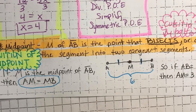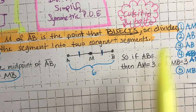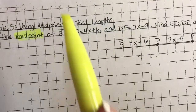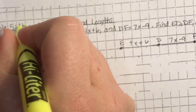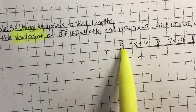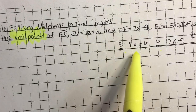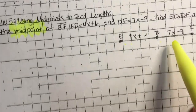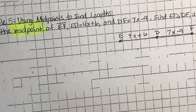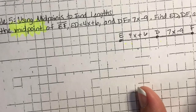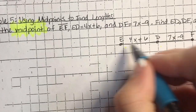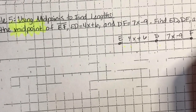D is the midpoint of EF. ED equals 4x plus 6, DF equals 7x minus 9. We want to find ED, DF, and EF. Since D is the midpoint, we write all five equations: ED equals DF; EF equals 2ED; EF equals 2DF; ED equals one half EF; DF equals one half EF.